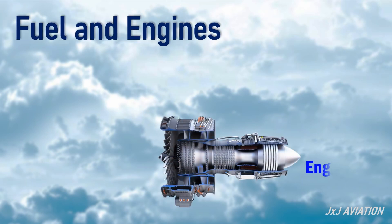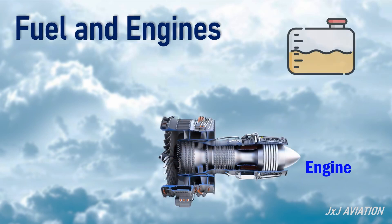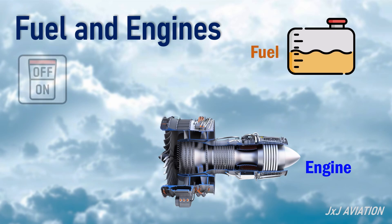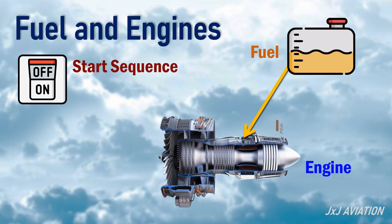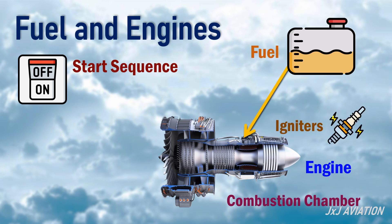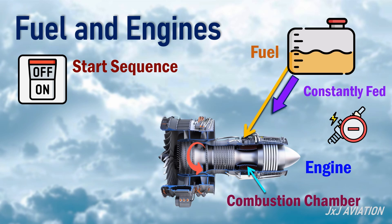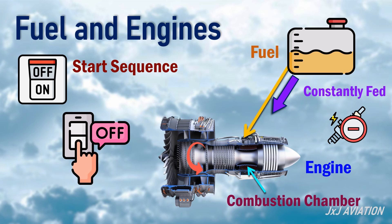On gas turbine engines, fuel is needed to keep the engines running. When the engines are started on ground, fuel is slowly introduced during the start sequence and burnt with the help of igniters in the combustion chamber. Once the engine's high-pressure shaft reaches a specific rotation speed, the igniters cut off. The fuel is constantly fed to the engines until the end of flight when the aircraft is on ground and engines are switched off.